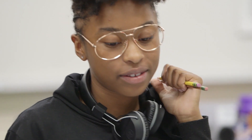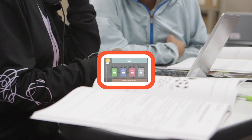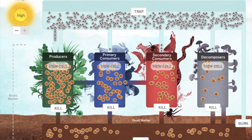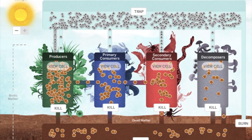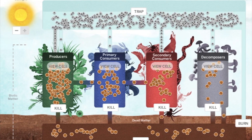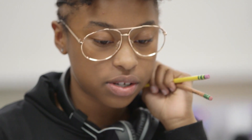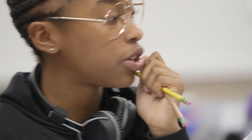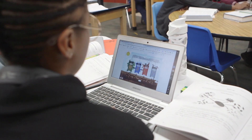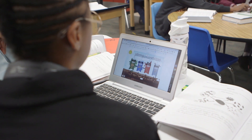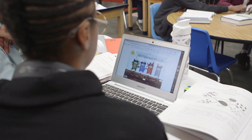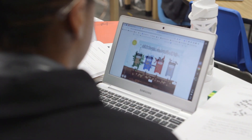If you kill the decomposers, or if you just reduce the amount of them that there are, then there'll be fewer organisms to break things down, making the energy storage molecules not be there. Then that reduces the carbon dioxide in the air, which makes everything else be affected.